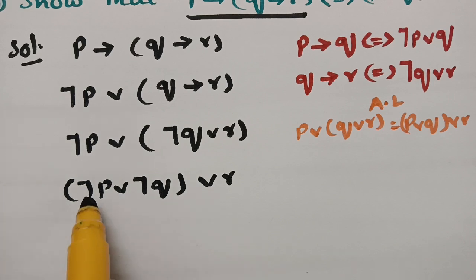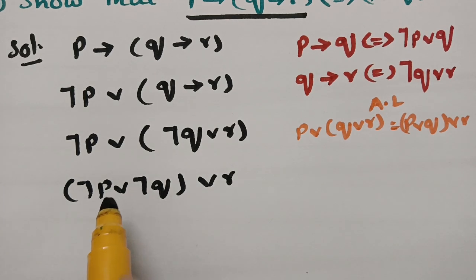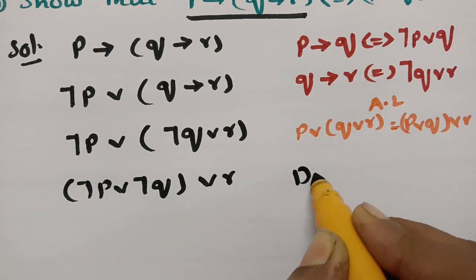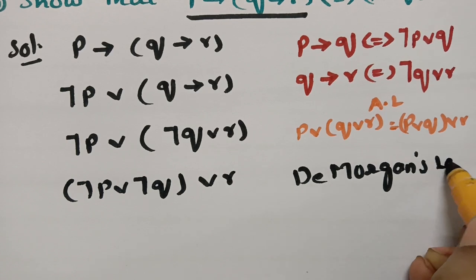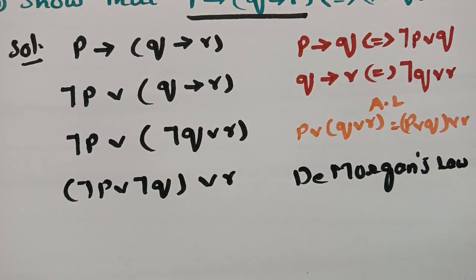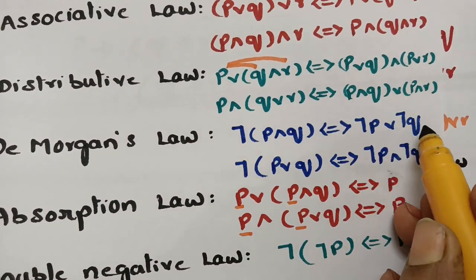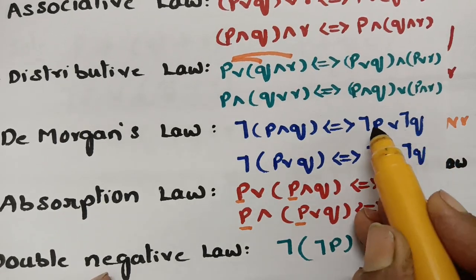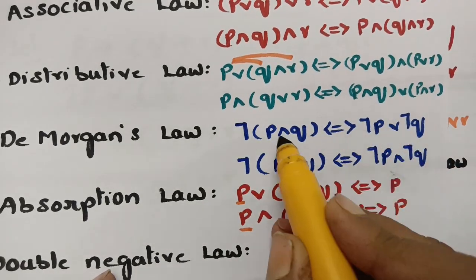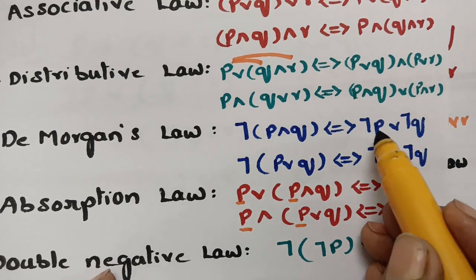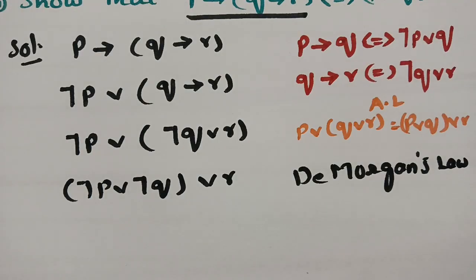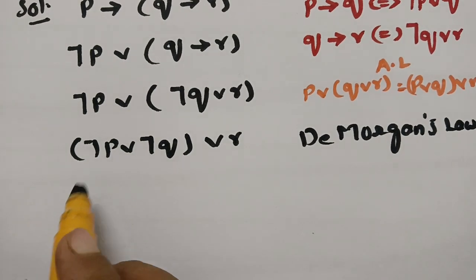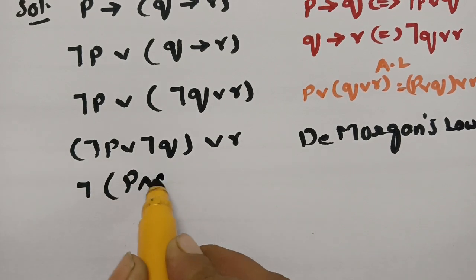Now I apply De Morgan's law. Taking negation outside from (negation P or negation Q): if I take negation from both terms out, the 'or' becomes 'and'. This gives negation of (P or Q) — wait, specifically: negation P and negation Q under negation becomes P and Q. So applying De Morgan's law to those two terms with R remaining outside.